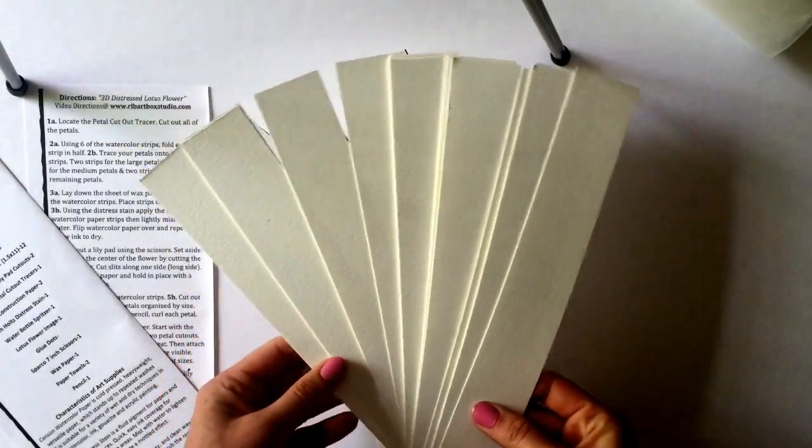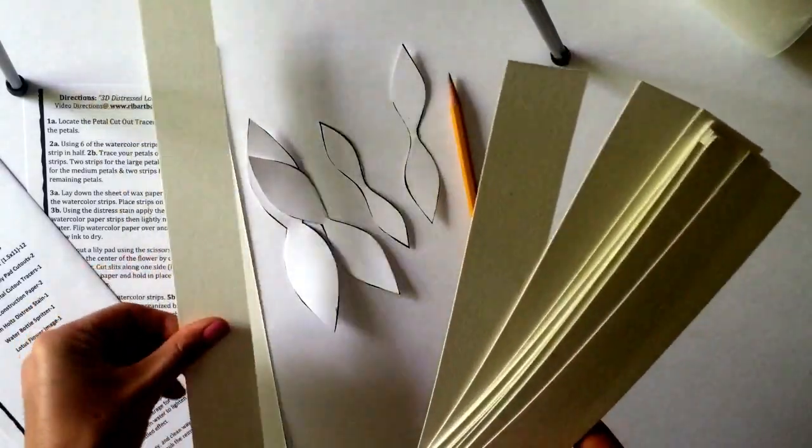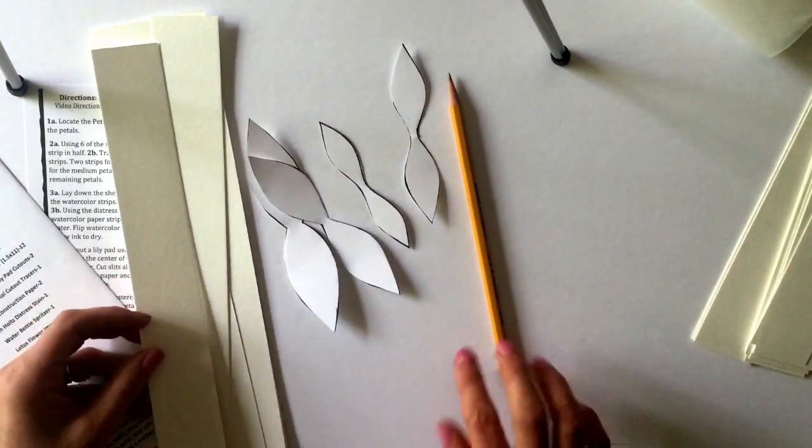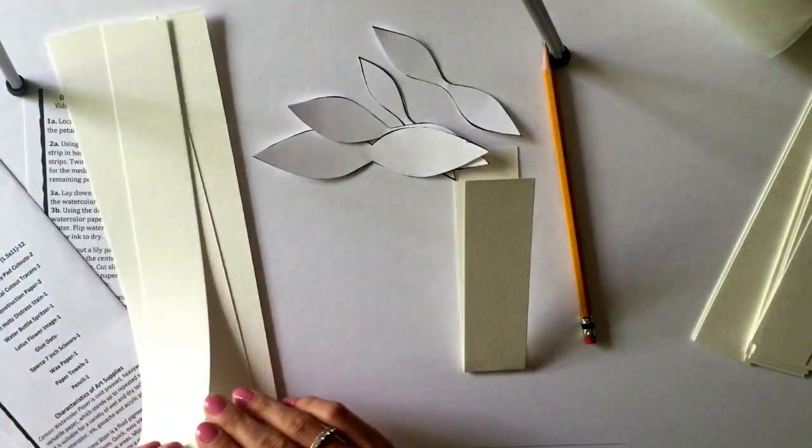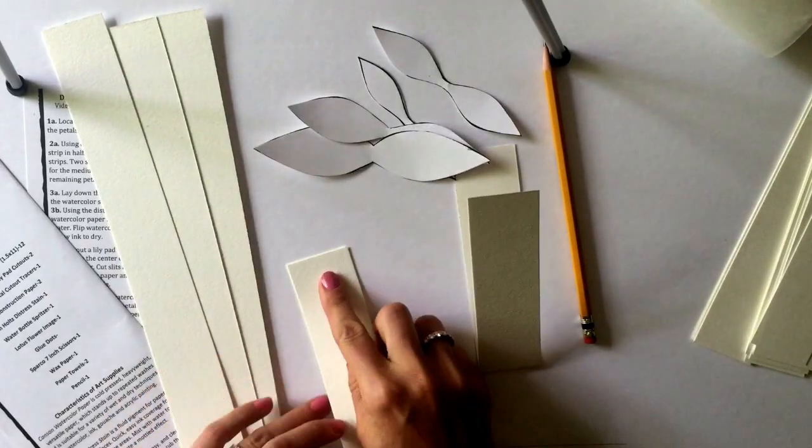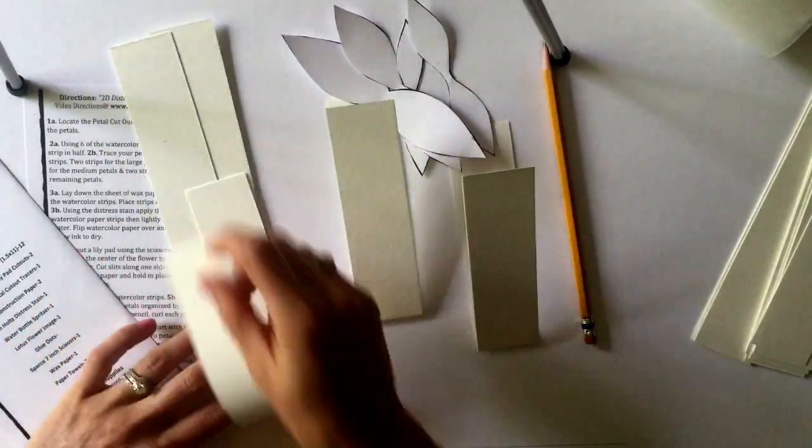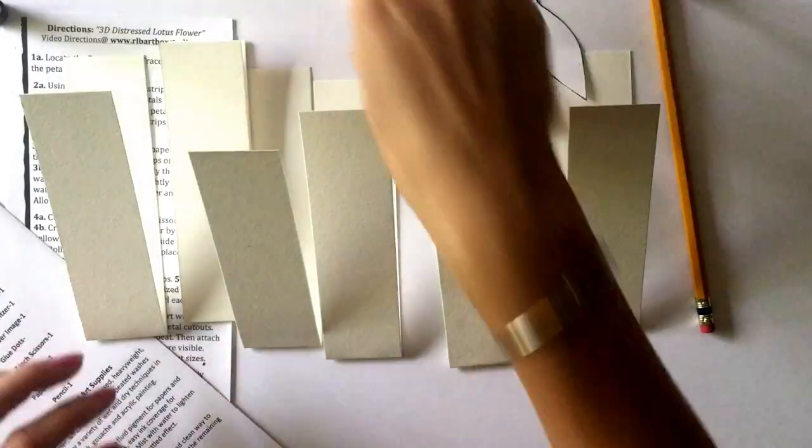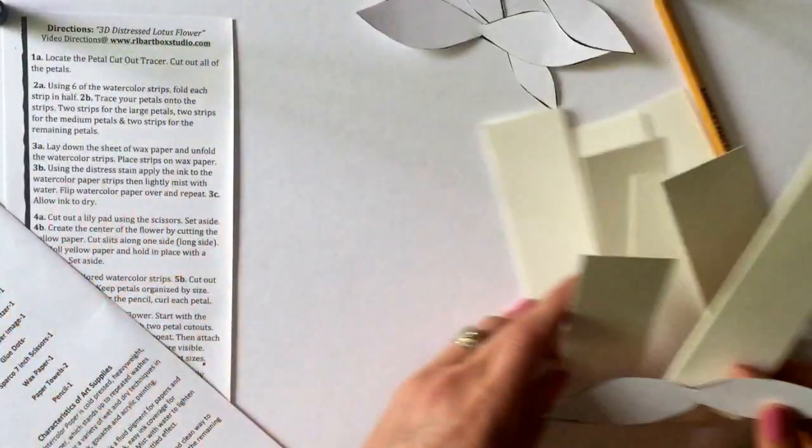Step 2a, using six of the watercolor paper strips, fold each strip in half. Step 2b, trace your petals onto the strips.